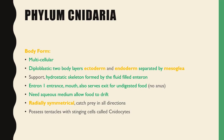Cnidaria need an aqueous medium to allow their food to drift, and you really find these on the seabed — they are among the first ever organisms on the planet. They are radially symmetrical so they can catch prey in all directions. They also possess tentacles with stinging cells called cnidocytes.